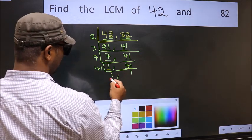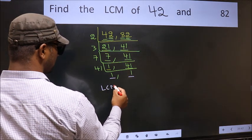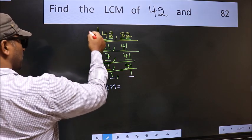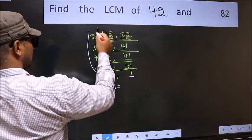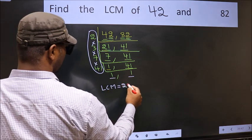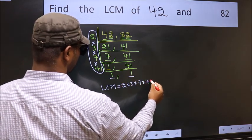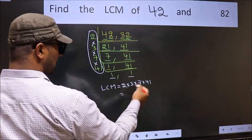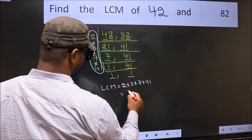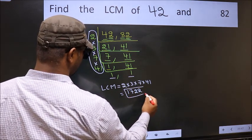So we got 1 in both the places. So our LCM is the product of these numbers. That is 2 times 3 times 7 times 41. When we multiply these numbers we get 1722 is our LCM.